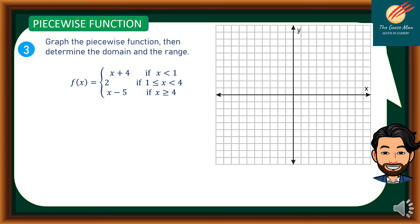Moving on to problem number three: graph the piecewise function and determine the domain and range. This function has three sub-functions: f(x) = x + 4 if x < 1; f(x) = 2 if 1 ≤ x < 4; and f(x) = x - 5 if x ≥ 4.